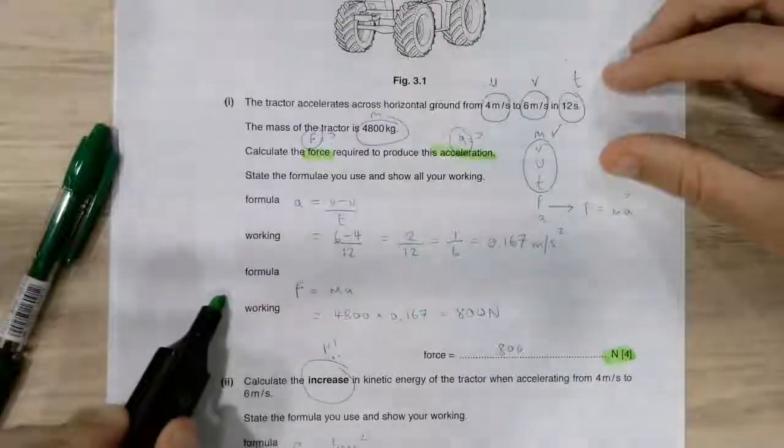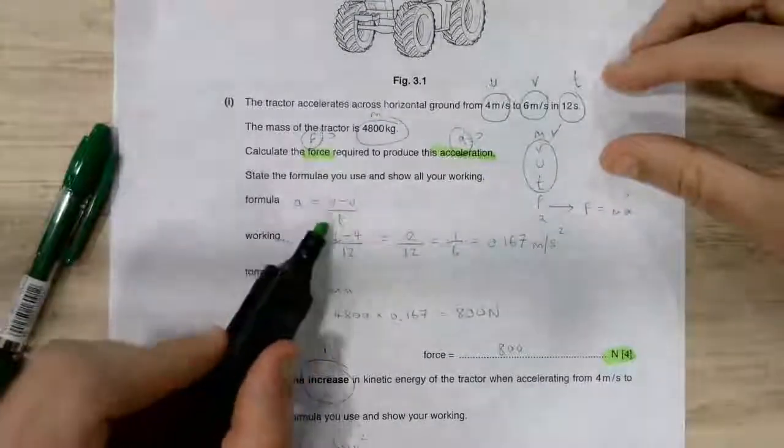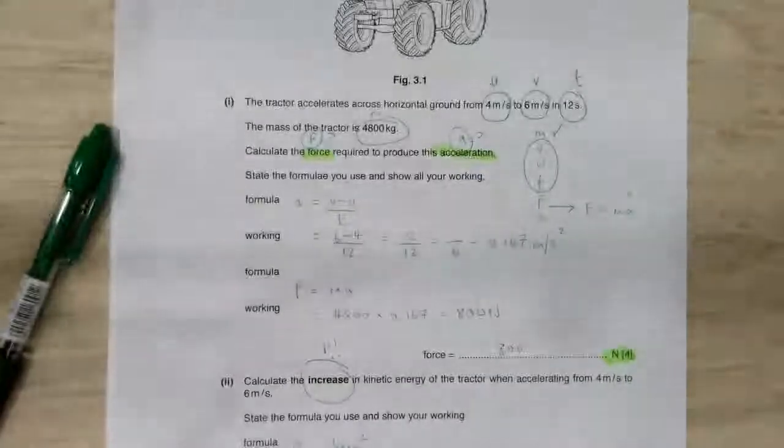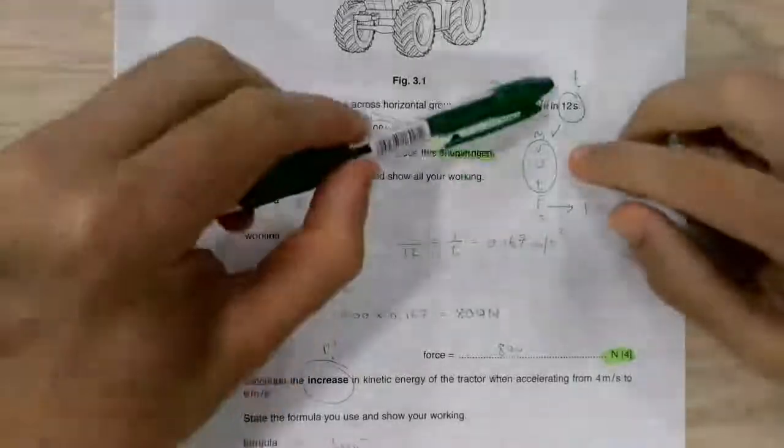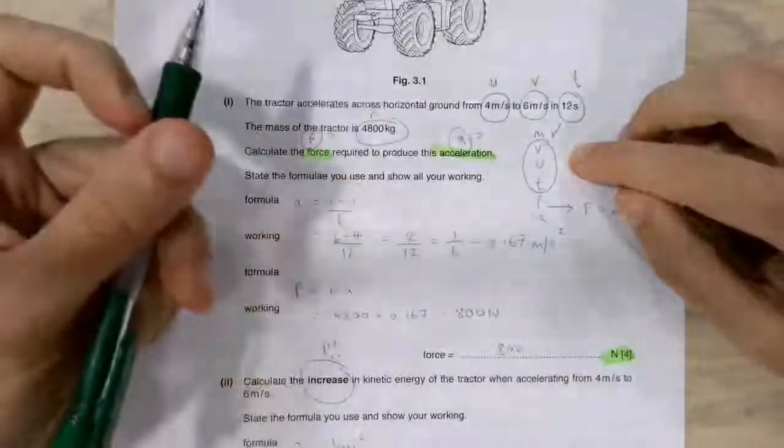First one and then the second one. The first one is for acceleration. A equals the difference in speeds divided by time. It's the rate of change of velocity. That comes out. It's 6 minus 4 divided by 12. 1 over 6, 0.167.